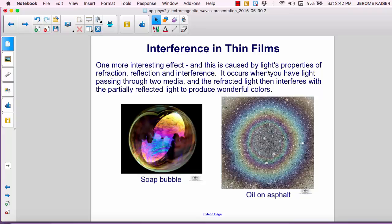It occurs when you have light passing through two media, and the refracted light then interferes with the partially reflected light to produce wonderful colors. Two examples you can see below are the soap bubble and the oil film on the asphalt.